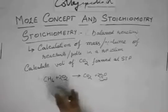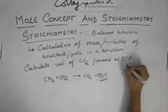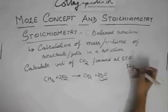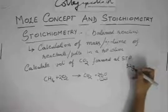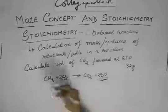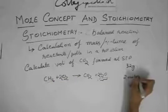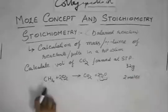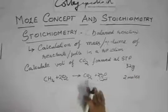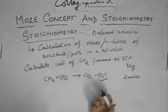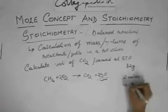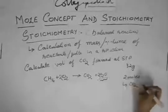So now what you do is, same 32 grams of methane are taken. 32 grams equals 2 moles. Now 1 mole of methane gives 1 mole of CO2, so 2 moles of methane will give 2 moles of CO2. So 2 moles of CO2 are formed.